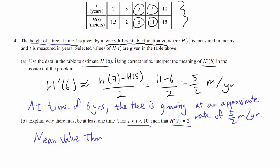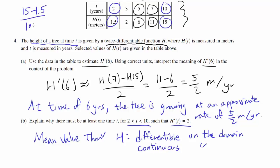We have H being twice differentiable, so we know H is differentiable on the domain, and because it's differentiable, it must also be continuous on the domain, which means we can apply Mean Value Theorem. But applying it from 2 to 10 gets us (15 - 1.5)/(10 - 2). There has to be a value such that H'(t) is (15 - 1.5)/(10 - 2), and we see that this thing is not 2.